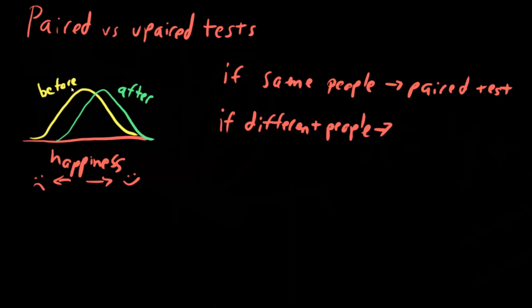You can still make some statement about whether or not this amusement park ride on average increases people's happiness. However, the strength of that test is going to be a lot weaker - the criteria for significance will be more strict in this unpaired test. Why? Well, it's because we have to treat